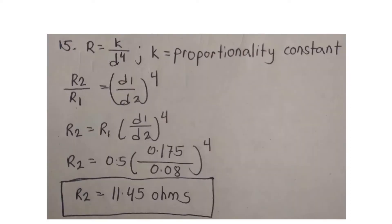In this problem, since the specific resistance of the material is constant, we will use the formula resistance is equal to the proportionality constant all over diameter raised to 4.